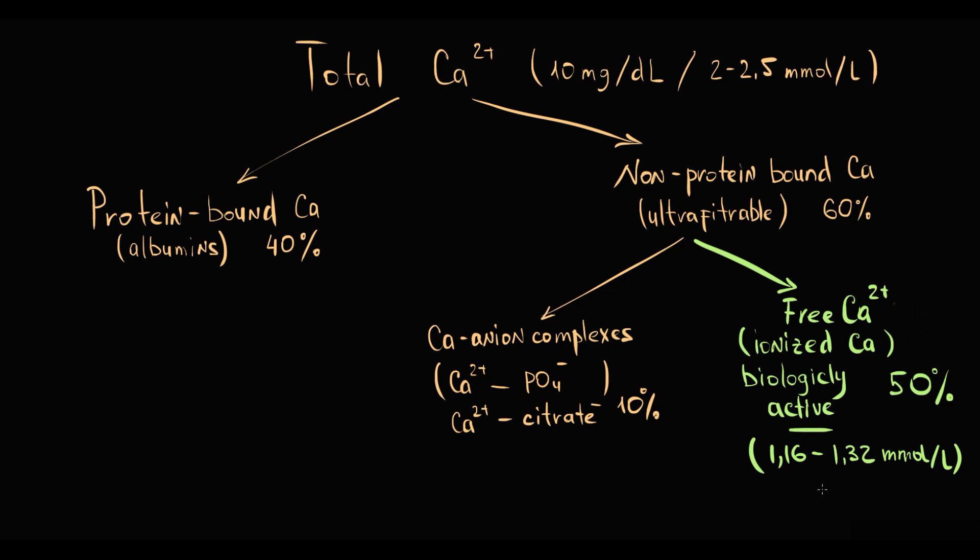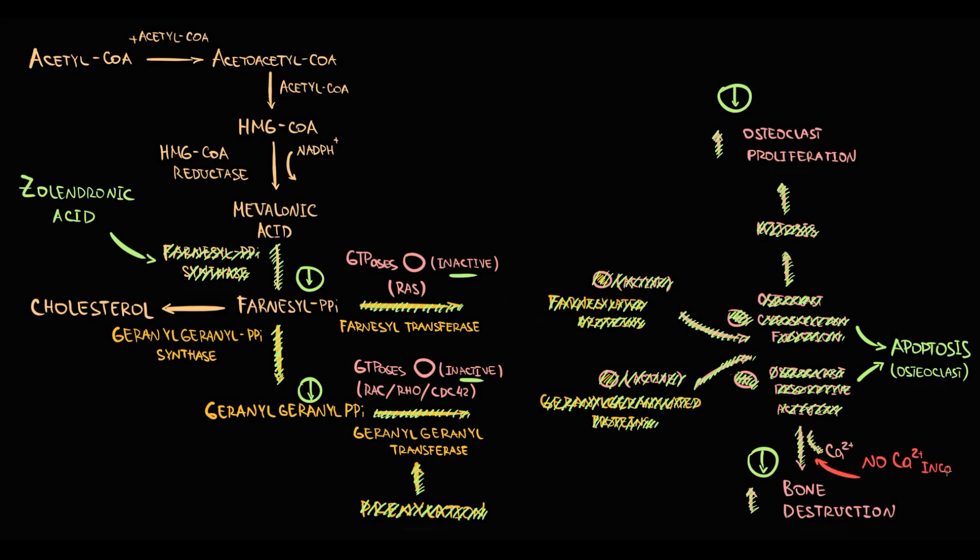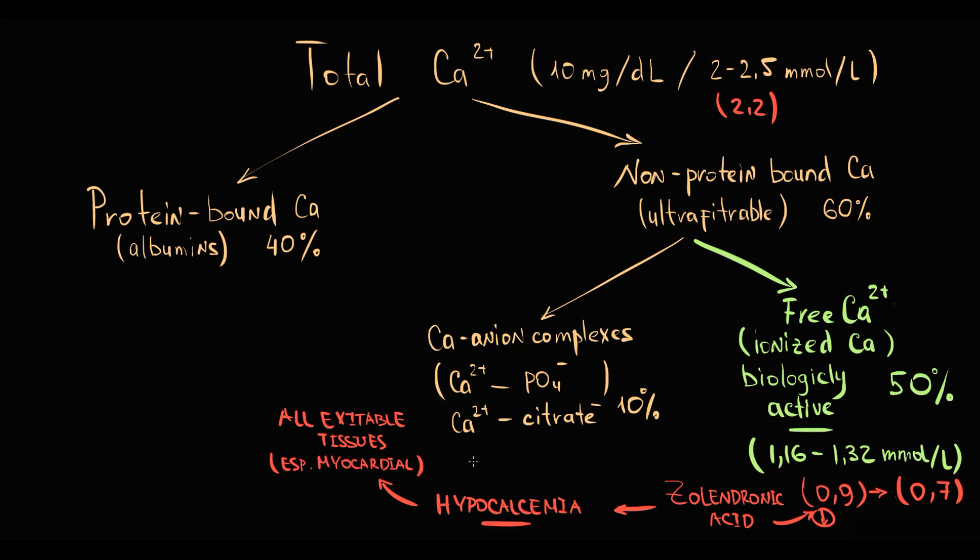So when you prescribe zoledronic acid, you know that osteoclast function will be inhibited. After the injection, there will be no source of blood calcium. And there is a possibility that with normal total blood calcium level, 2.2 for example, the level of free blood calcium can be low, 0.9. And the injection of zoledronic acid can cause hypocalcemia that will affect practically all excitable tissues in the body, primarily myocardial tissue. Due to this reason, you should carefully monitor the level of free blood calcium.